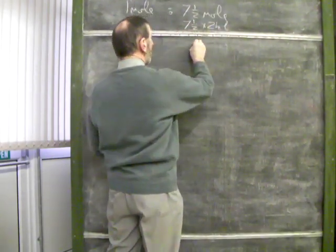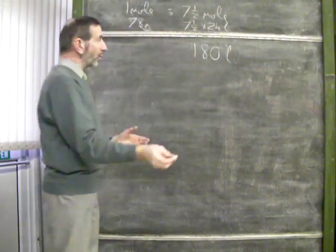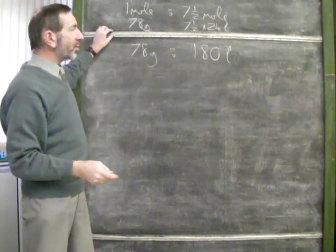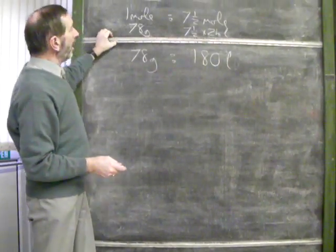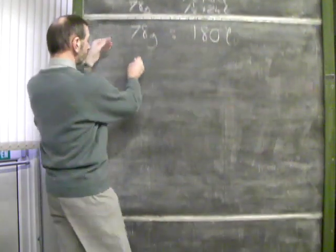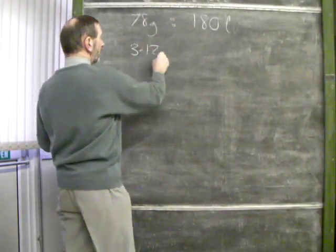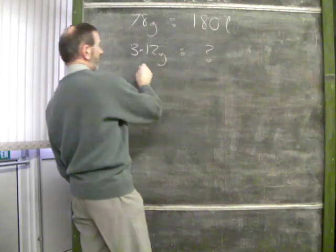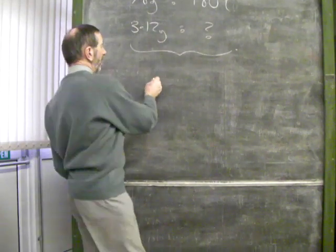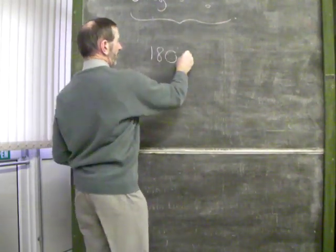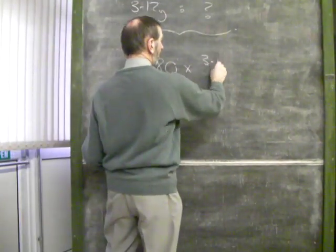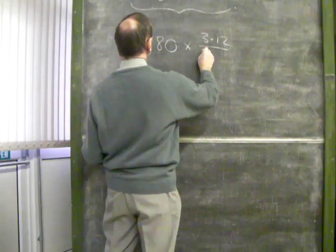So, if we had 78 grams of benzene, that would require 180 litres of oxygen. But the question is about 3.12 grams of benzene. So, 3.12 grams of benzene requires what volume of oxygen? This will be considerably less than 180 litres. We're going to find a fraction of 180. It will be this fraction, 3.12 over 78.